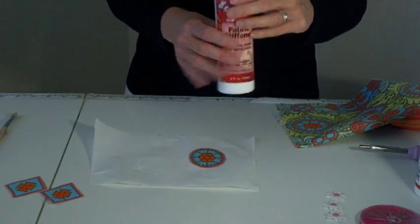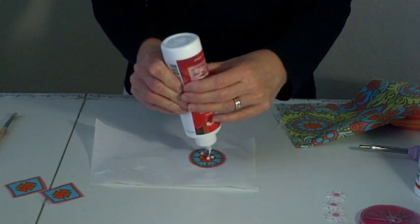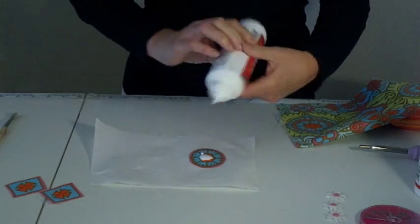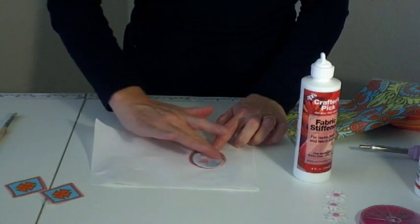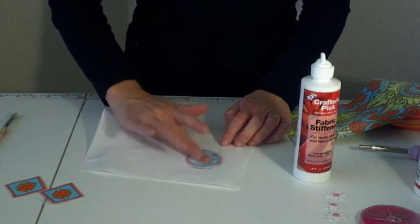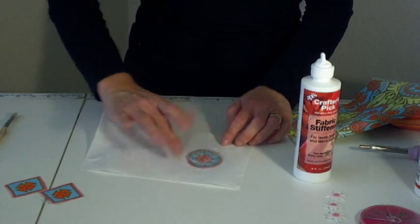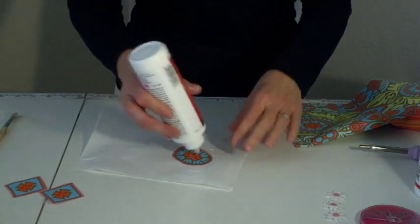So what you're going to do next is take your fabric stiffener. Any brand will do, I just happen to have this one. And you are going to add fabric stiffener. Get ready to get your fingers dirty. I like to use my fingers rather than a brush. It goes a little faster. Go ahead and just coat the one side and then turn it over and do the same.